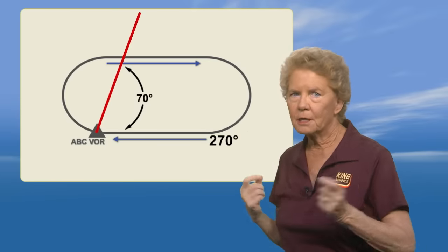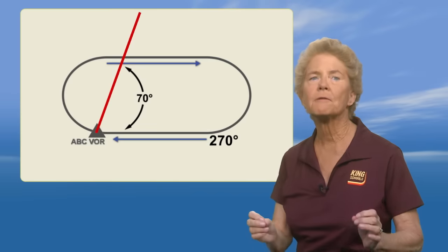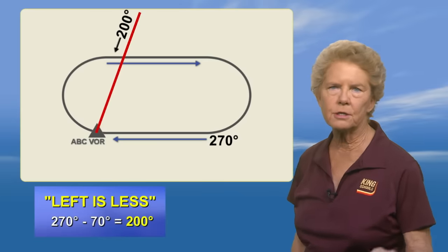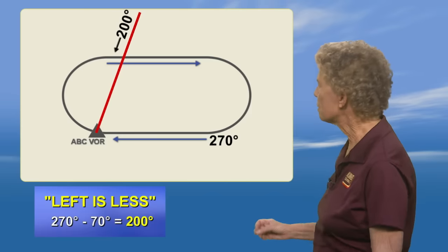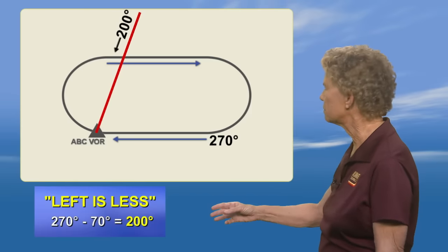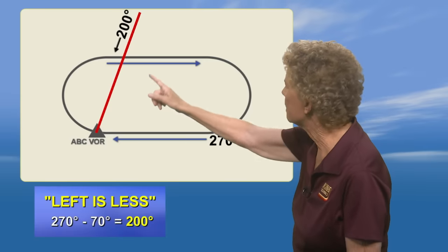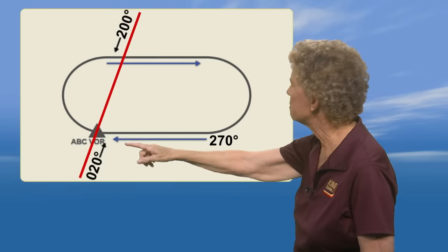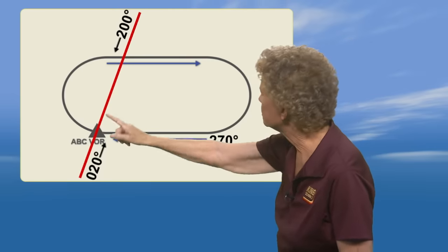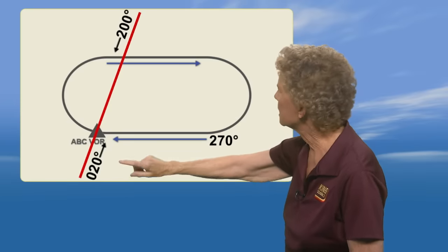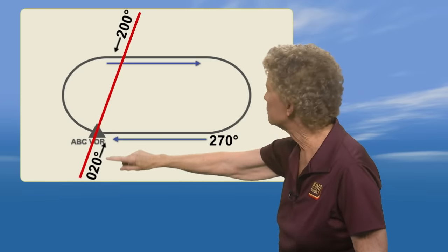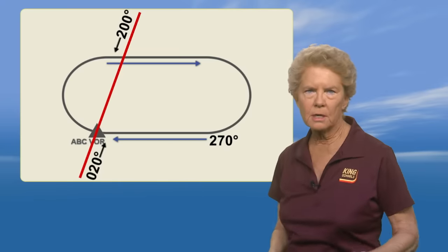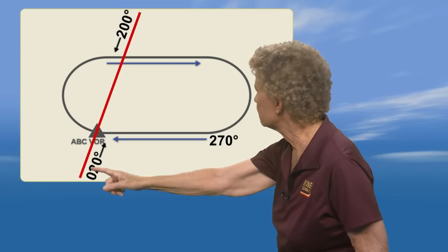Sometimes the gears in my head start to grind, but I just remind myself that it's really fairly easy. Think: left is less. So for a heading 70 degrees to the left of 270, we subtract 70, which gives us 200 degrees. Next, take that pencil and slide it out through the other side of the fix. The reciprocal of 200 degrees is 020 degrees, so draw an extension of your line through the holding fix and label it with the course, the heading to the fix of 020 degrees. What we have done is use our pencil to create a diagonal dividing line through that holding pattern.